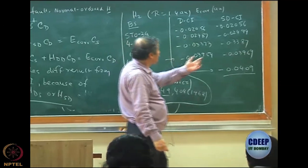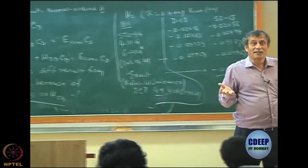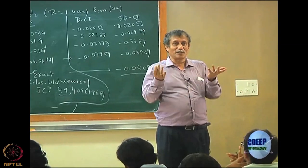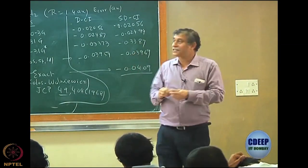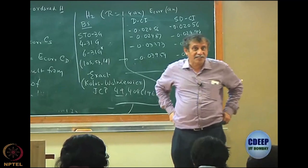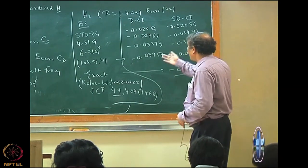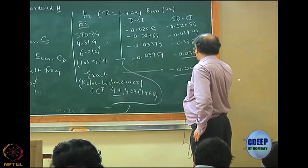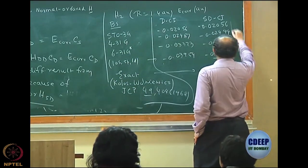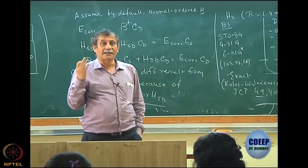For hydrogen molecule, SDCI is exact within a given basis because you cannot have triply excited determinants — there are only two electrons. So the remaining gap from the exact result is purely due to basis set incompleteness, not CI truncation. The basis set itself is not large enough, which is why the numbers differ from the exact.